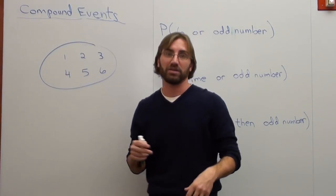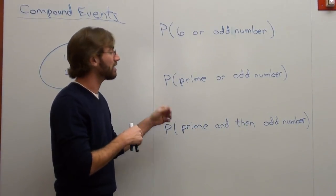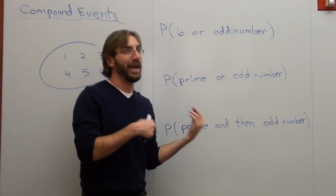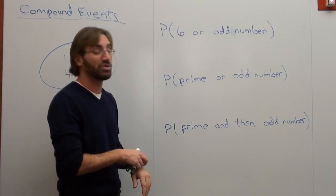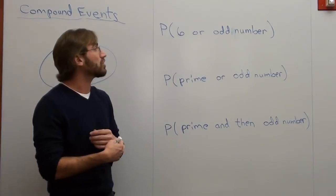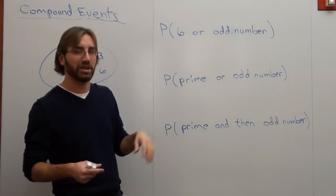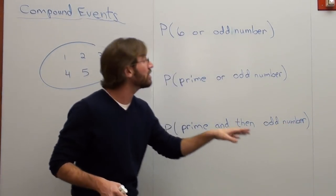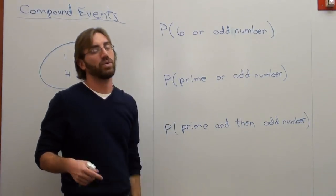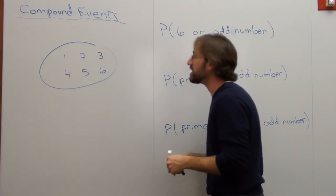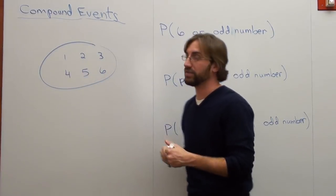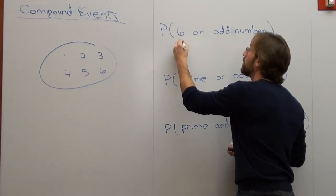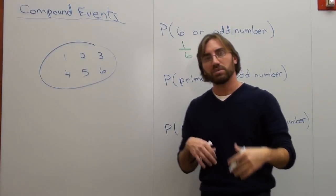And I've got a compound event, which is basically an or or an and. And then you can also use the word then. And and then are the same thing. So students usually get a little confused there. So the first example says, what's the probability that I'm going to roll a 6 or an odd number? Well, let's figure it out. The chances that you're going to roll a 6 are 1 out of 6. The word or means plus.